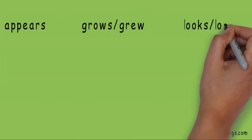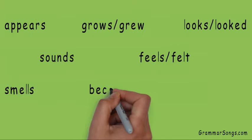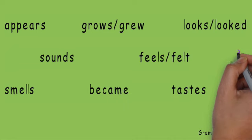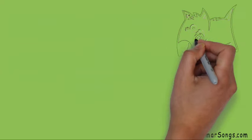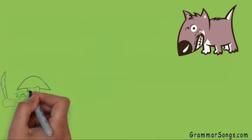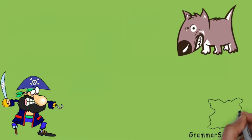There are also many other verbs that can be linking or action depending on the situation. Huh? Say what? Don't panic. That's what this video is all about. Let's analyze some pairs of sentences to determine when the verb in the sentence is action and when the same verb is being used as a linking verb.